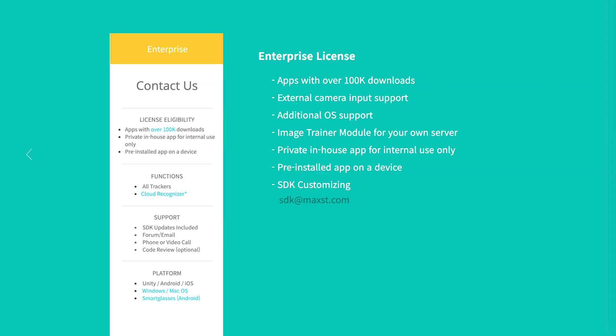Last, Enterprise license. As I mentioned earlier, Enterprise license is not related to the size of the enterprise, and it is required for those occasions. After developing your app with MaxDare SDK, if the app has more than 100,000 downloads, you will need to upgrade your license to Enterprise. Second, if you need an external camera interface support to apply AR functionality to your existing app that uses a camera feature — and this feature can be pre-tested with the free license. If you plan to develop an app in Windows, Mac OS, or Smart Glasses, you also need the Enterprise license. When you want to train image targets on your own server because of security issues or any other reasons, you also need an Enterprise license.